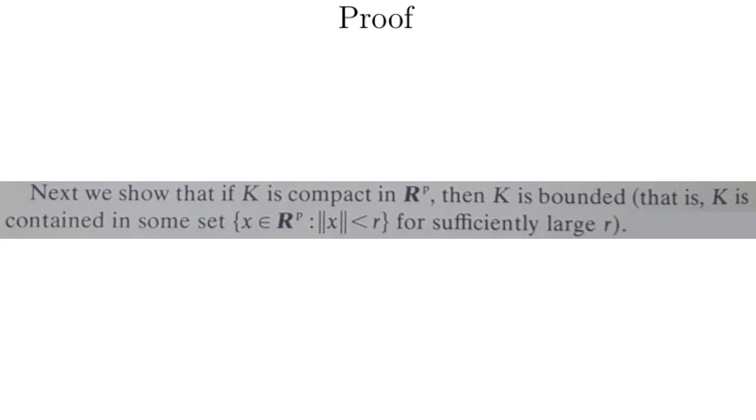Proof. Next, we show that if K is compact in R^p, then K is bounded. That is, K is contained in some set, the set of all x in R^p, such that the norm of x is less than R for sufficiently large R. Now we are trying to prove that K is bounded, using the idea that it is contained in some open ball, center 0, which is what that set we defined is. It's why he chose R for radius.